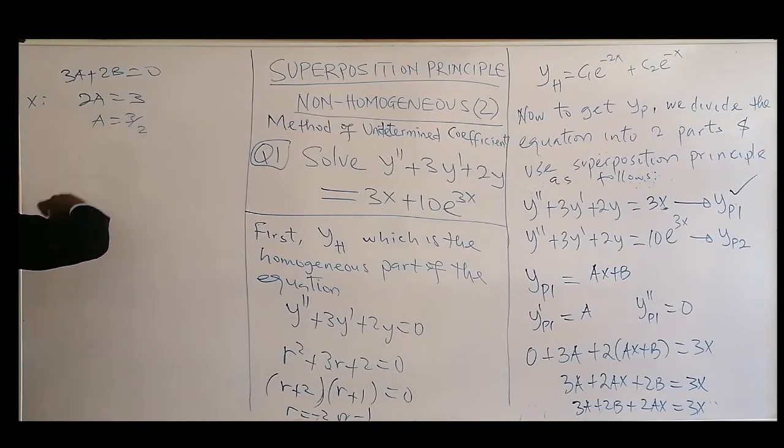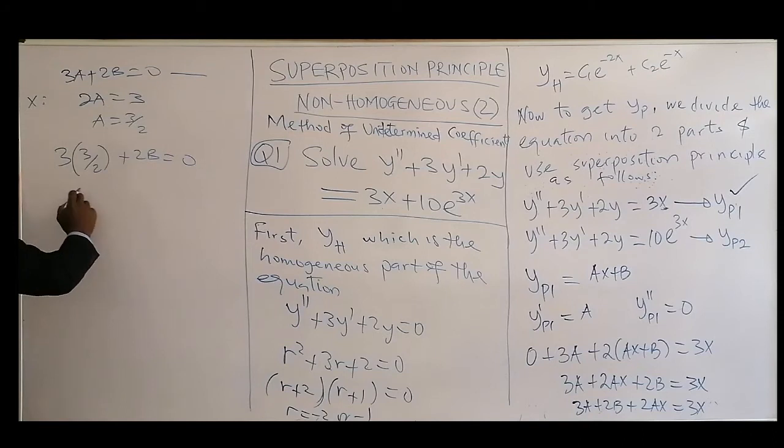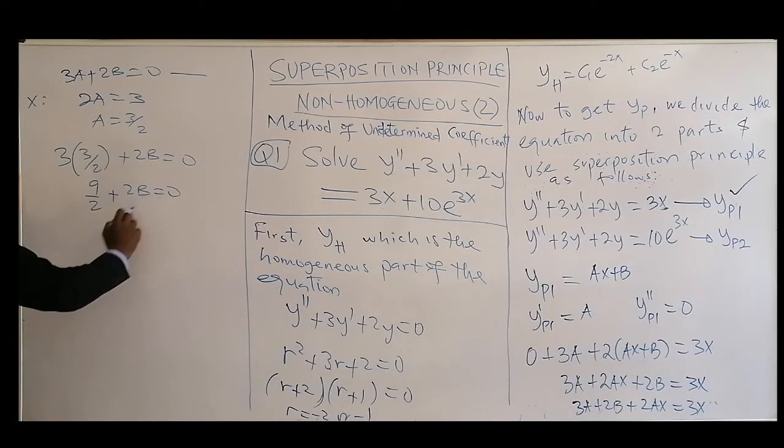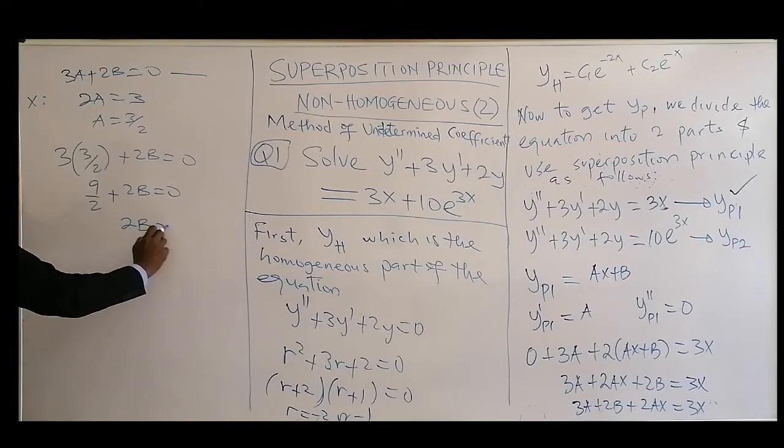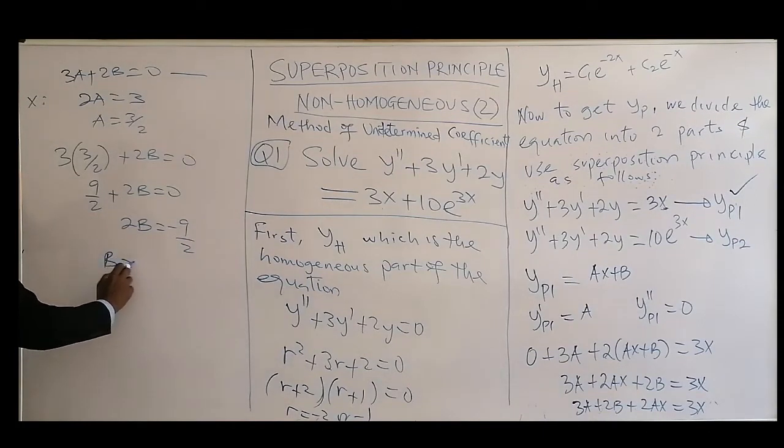So A is 3/2. Then you can come back here and substitute there, and that will be 3 times 3/2 plus 2B equal to 0. So that will be 9/2 plus 2B equal to 0. So 2B equal to -9/2, so B equal to -9/4.